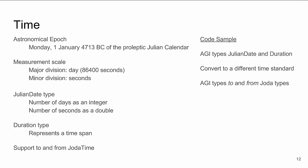One thing to mention is that Julian dates are not the only time type in components — take a look at the documentation for other types you can use. In the code sample, I'll show you the JulianDate and Duration types and then how to convert to and from JODA.